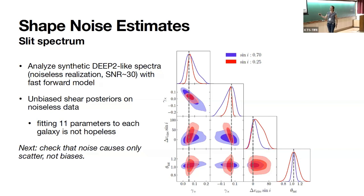We need to first check that the approximations in the fast forward model work sufficiently well. Analyzing the synthetic DEIMOS spectrum with the fast forward model, where we put in a covariance for a signal-to-noise of about 30 but the model data itself is noiseless — so there are no biases from noise yet — you can see beautifully that the posteriors on the two shear components obtained from two galaxies at different inclinations are unbiased.